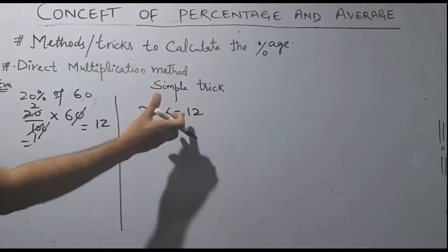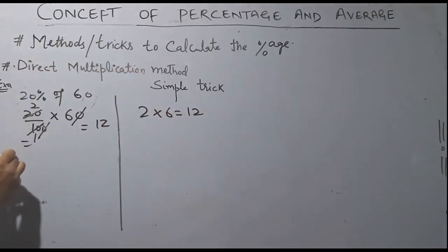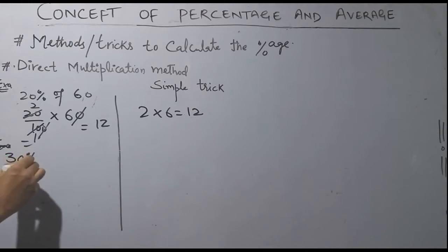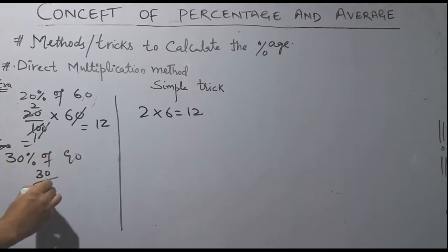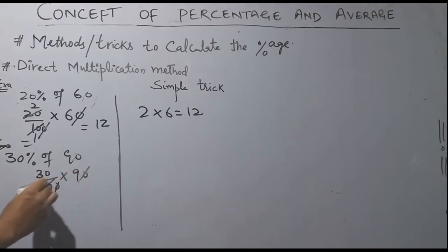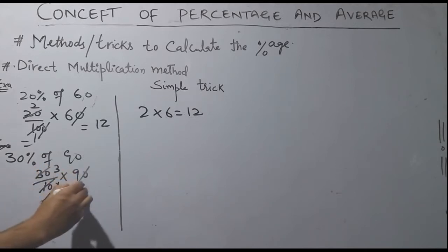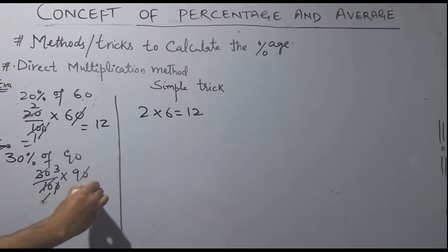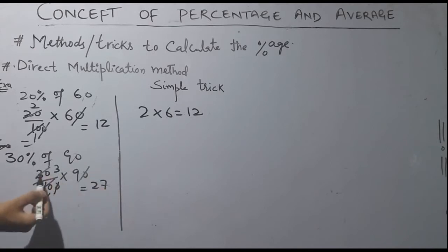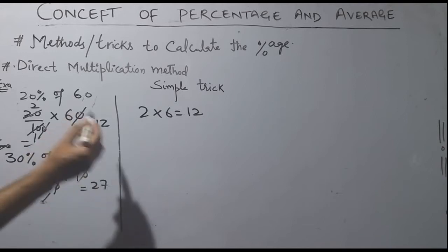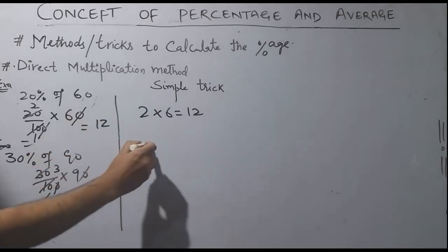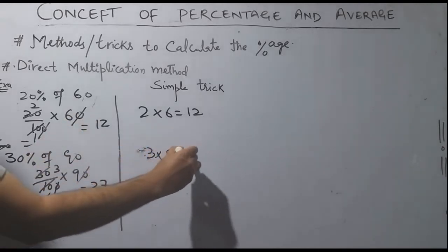Second example: 30% of 90. That is 30 divided by 100 into 90. Cancel the zeros and you get 3 × 9 = 27. So in one or two seconds you can get the answer. For example, 30% of 600: 30 divided by 100 into 600. Cancel zeros and you get 3 × 60 = 18. So 30% of 600 is 180.